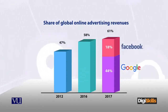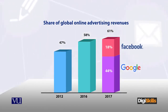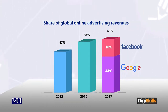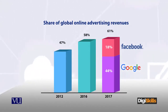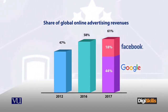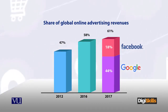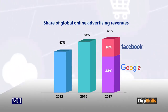In the next graph you can see: in 2012 the online advertisement revenue share was 47%, in 2016 it was 58%, and now in 2017 it has become 61%. So this 25% amount — 25% was the percentage we spent on online advertisement.